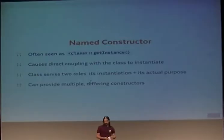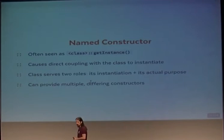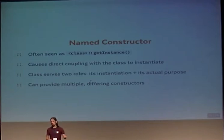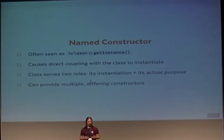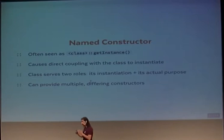Named constructors are one small step away from the new operator. A named constructor replaces the magic construct method with a method you can name yourself. It gives a few advantages: you can have multiple named constructors, allowing multiple ways of instantiating the same class. This is useful, for example, when working with exceptions where multiple errors can produce the same exception — you can create a named constructor for each error case. The downside is that named constructors make you responsible for both the instantiation and what the class is actually meant to do.